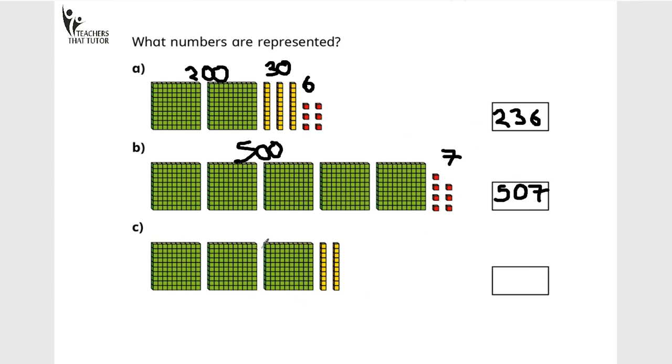This time we have three hundreds. So that's going to be 100, 200 and 300. And we've got two tens, 10 and 20. But this time we have 0 ones. So when writing this number, I would have a 3 in the hundreds column. I would have 2 in the tens column. And I'd put a 0 as a place holder for my ones.